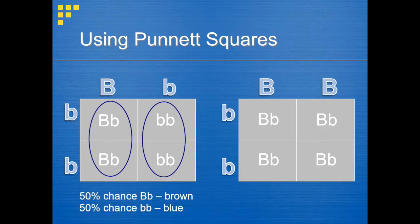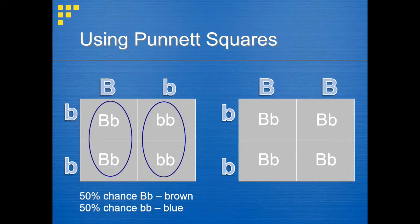Take a few minutes to set up the Punnett square and fill in all the possible genotypes for the offspring. For this case, all four possible genotypes for the offspring are the same. Since each genotype has a dominant allele, the offspring has a 100% chance of having brown eyes.